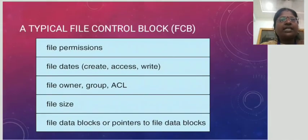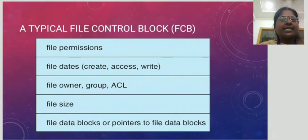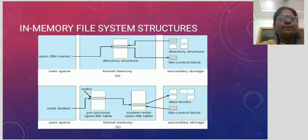A typical file control block, or FCB, contains file permissions, file dates — that is create, access, and write — file owner, group, and ACL, as well as file size. File data blocks are pointed to the data blocks.